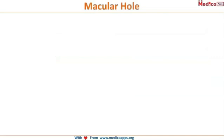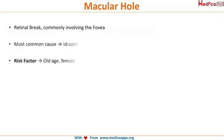A macular hole is a retinal break commonly involving the fovea. When there is a break in the retina at the fovea, it is called a macular hole. It is mostly an idiopathic condition involving the fovea.